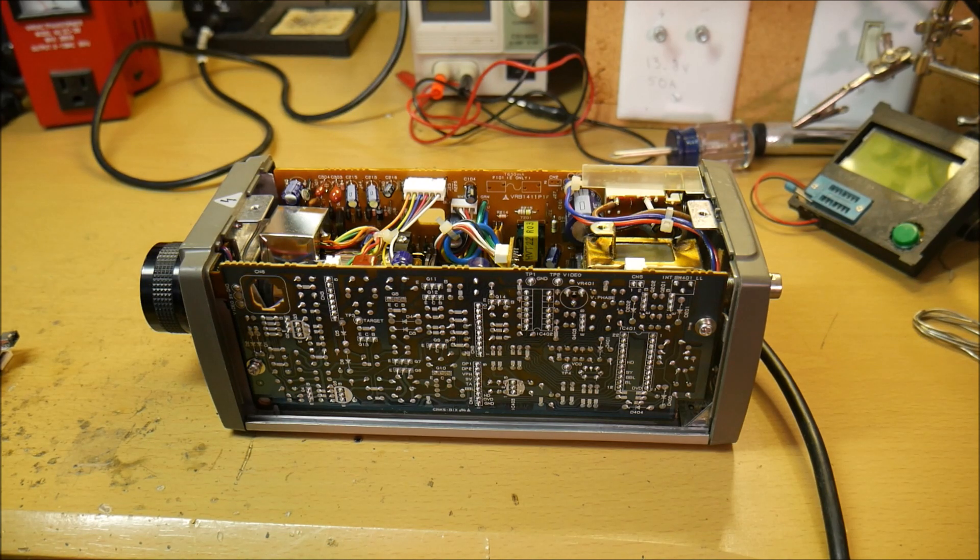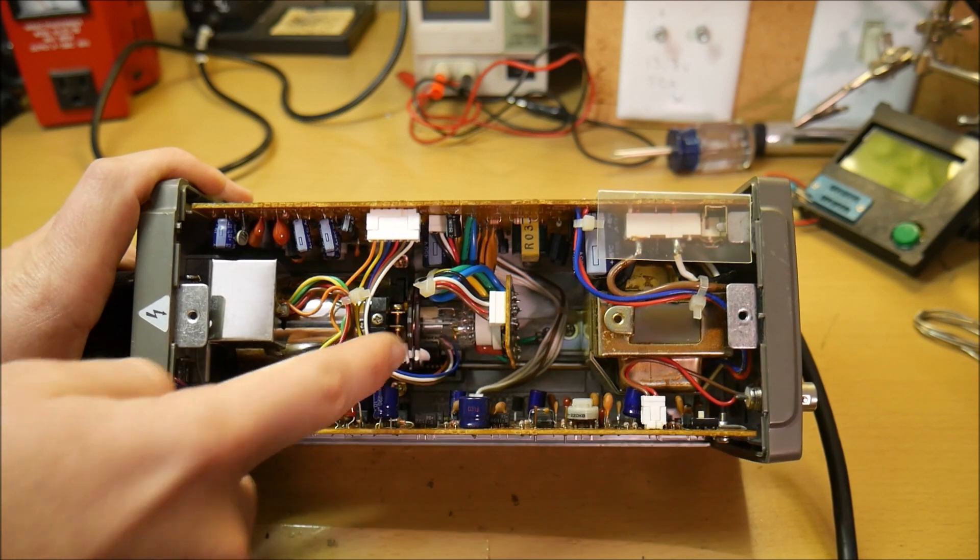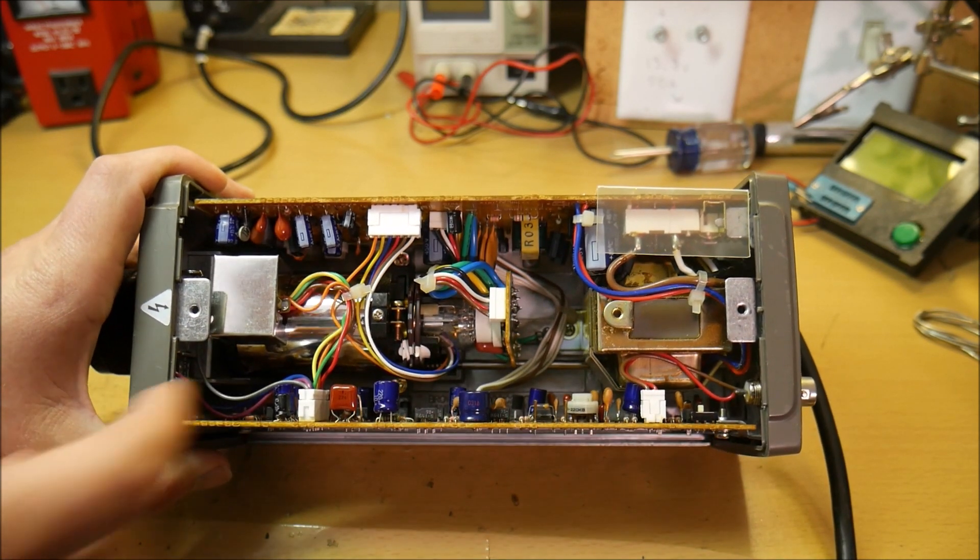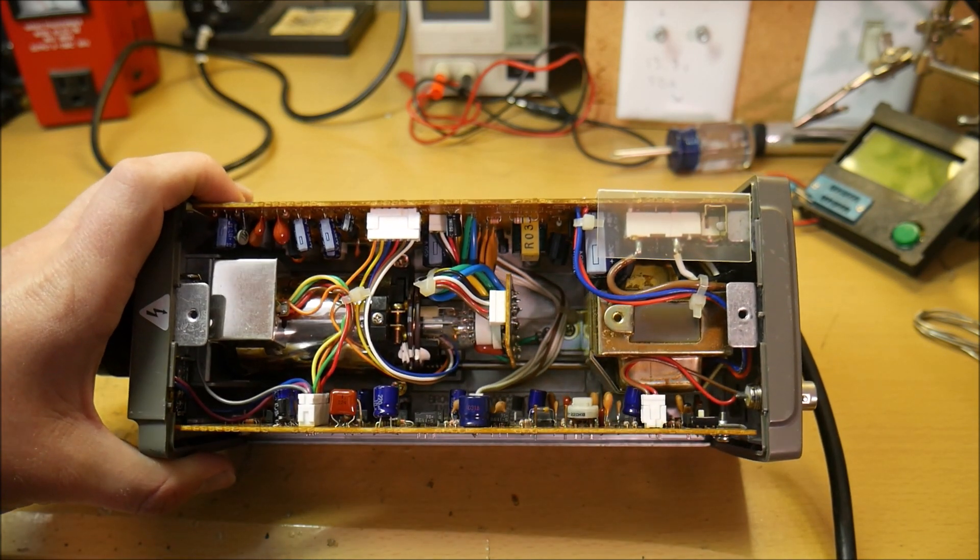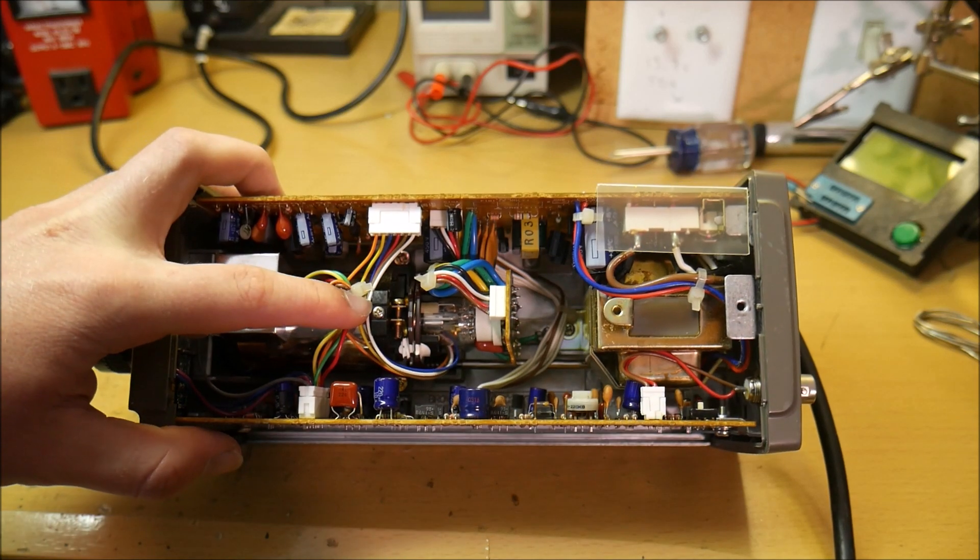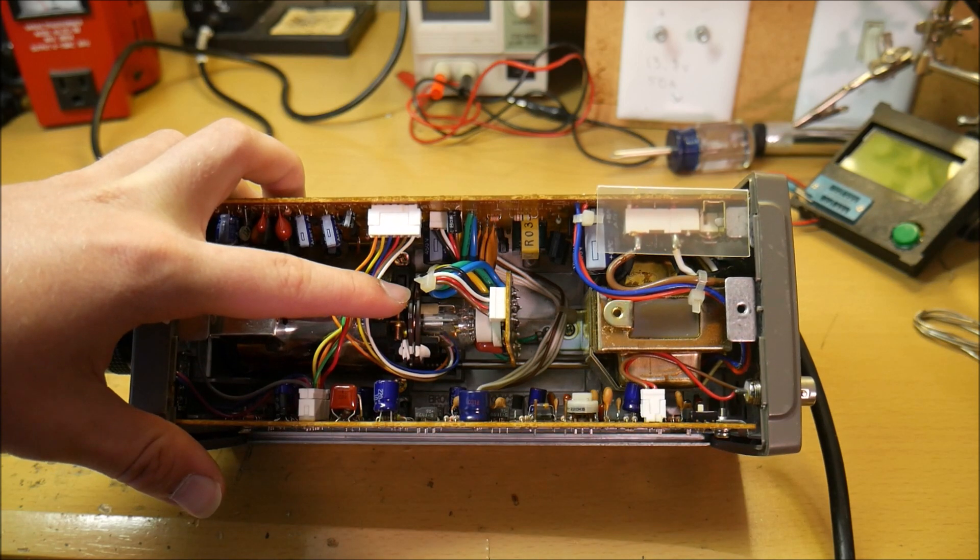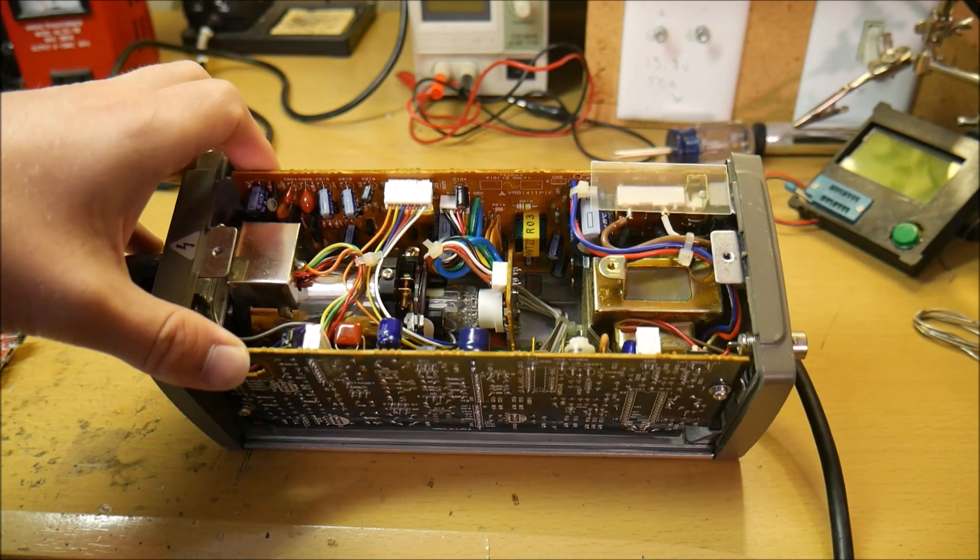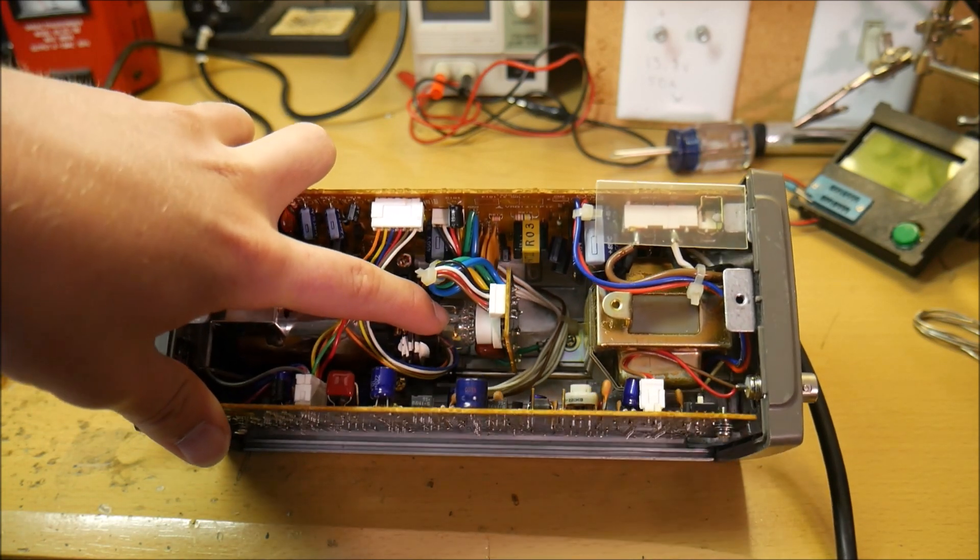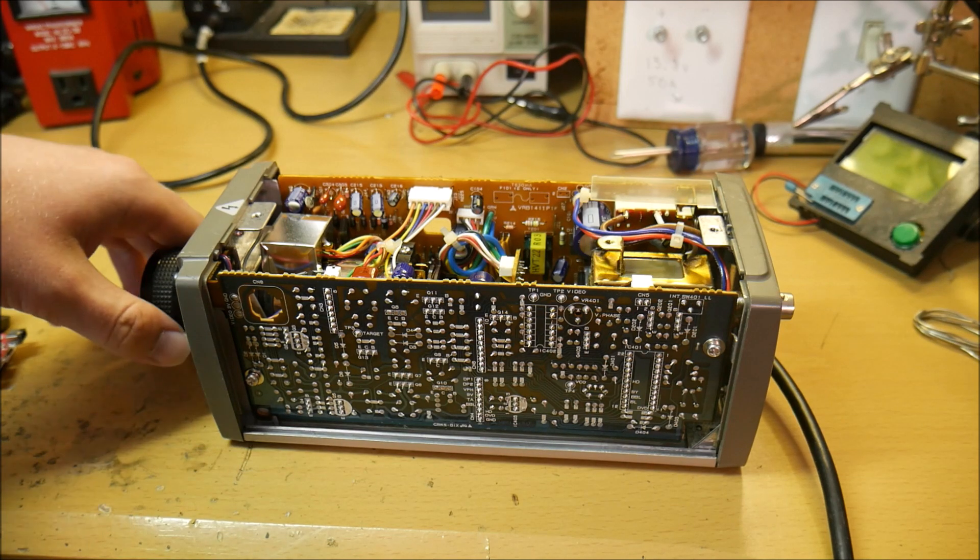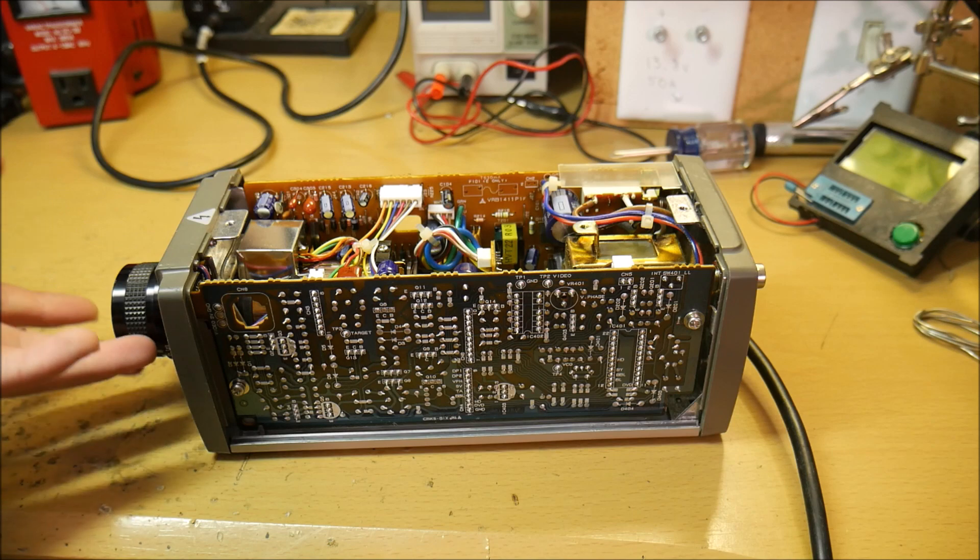But when I opened this little camera, I saw something I didn't expect to see. I saw something that looked like a CRT in the back, a cathode ray tube. I was a little bit confused, so I researched it and found out it's something called a Vidicon tube. Back in the day, cameras used something like this to record video. It operates on a similar principle to a CRT, but a little bit different. Now let's plug this in and see if it actually works.